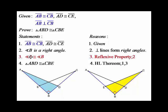Angle B is congruent to itself, shared between the two triangles. You now have enough information to say that triangle ABD is congruent to triangle CBE by the HL theorem — because you have a hypotenuse, a leg, and a right angle.